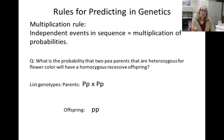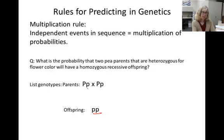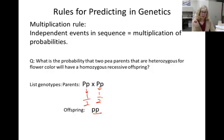But as problems become more complex, using probabilities becomes faster than making Punnett squares. You use the multiplication rule of probabilities if you're considering independent events. For instance, what is the probability that two parents that are heterozygous for flower color will have a homozygous recessive offspring? The likelihood of mom giving a little p is one half, and the likelihood of dad giving his little p is also one in two. So the likelihood of both events occurring is one in four, the same as we saw in the Punnett square.